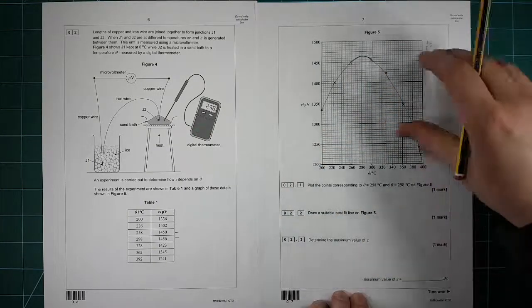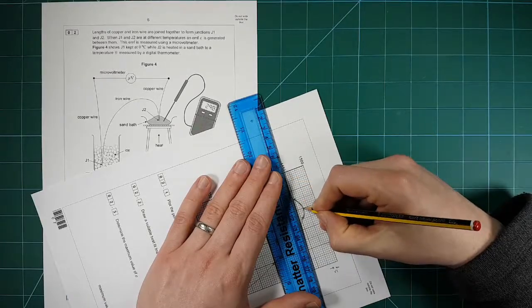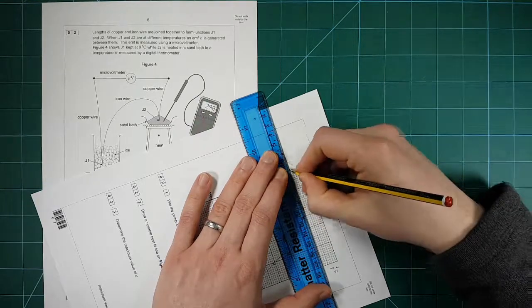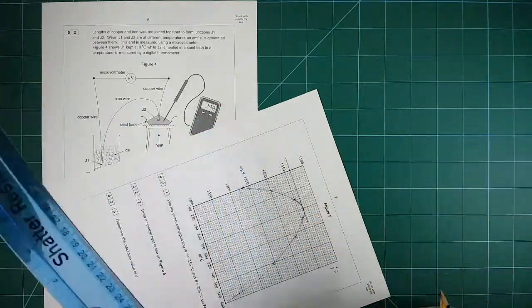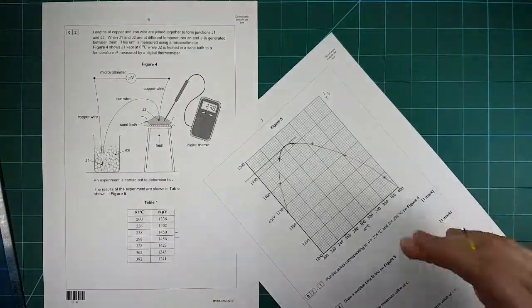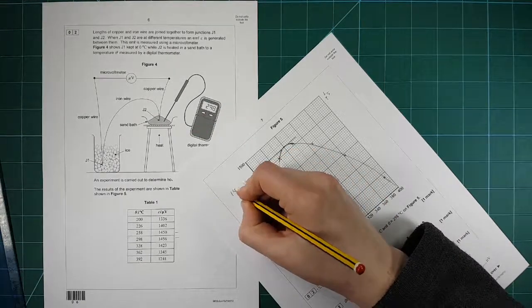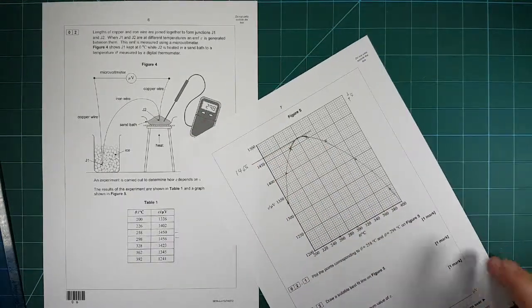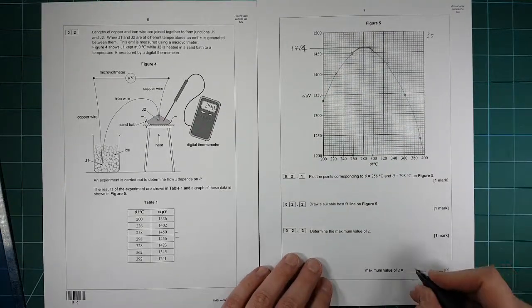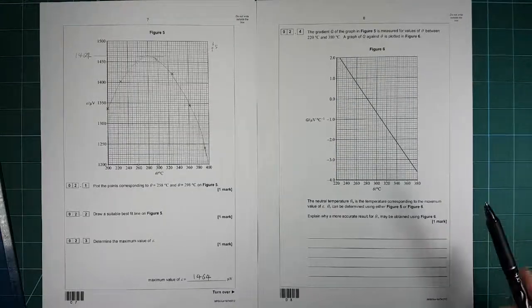Determine the maximum value of the EMF. So get your ruler, find the peak, which for me is almost exactly on that line. Draw a horizontal line across like so. And then we need to read off this value. So each of these is 5. So that's 55, 60, 65. Maybe one less than that. So maybe 1464 I think is what I'm going for because it's slightly below that line there. 1464 goes there.